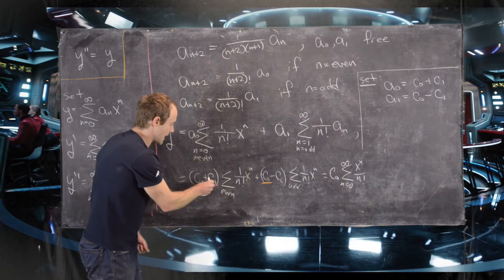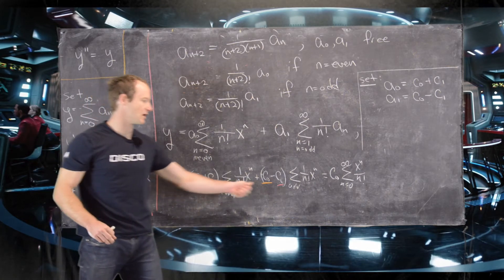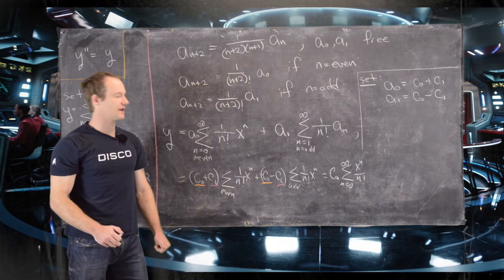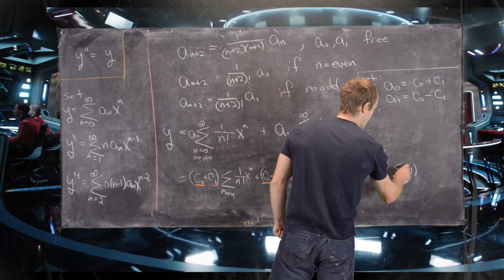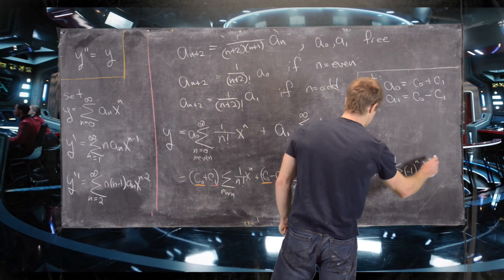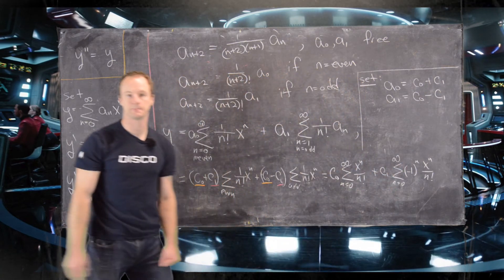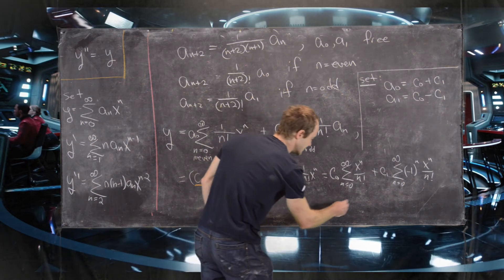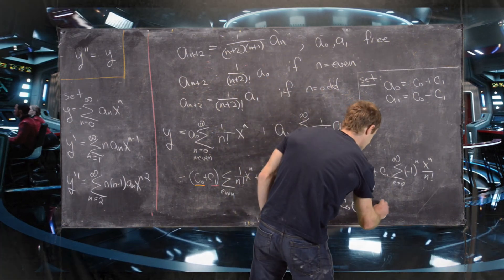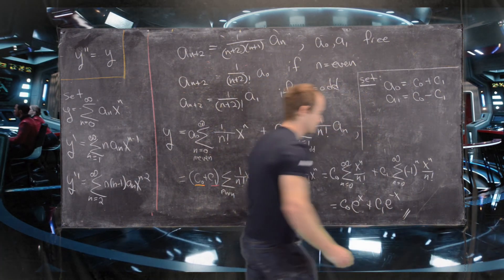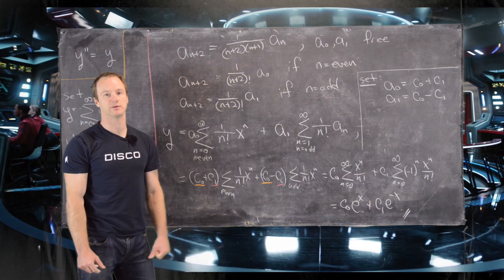The first series, c₀·Σ xⁿ/n!, equals c₀·eˣ, and the second series, c₁·Σ(−1)ⁿ xⁿ/n!, equals c₁·e⁻ˣ. So the general solution is y = c₀eˣ + c₁e⁻ˣ, which is exactly what you would expect from the standard method for solving homogeneous second-order linear differential equations.